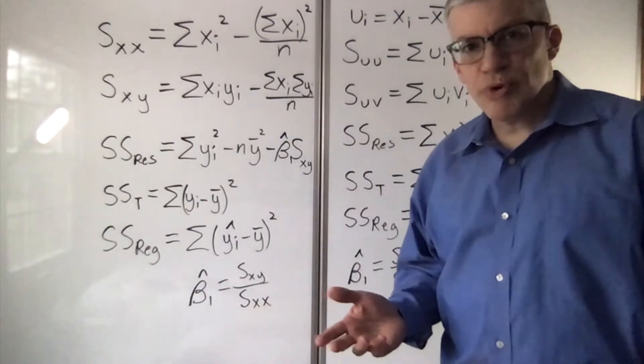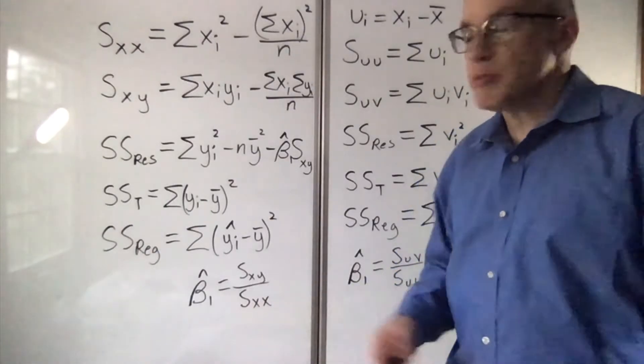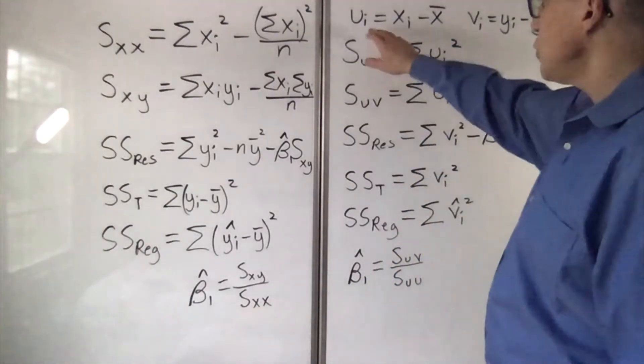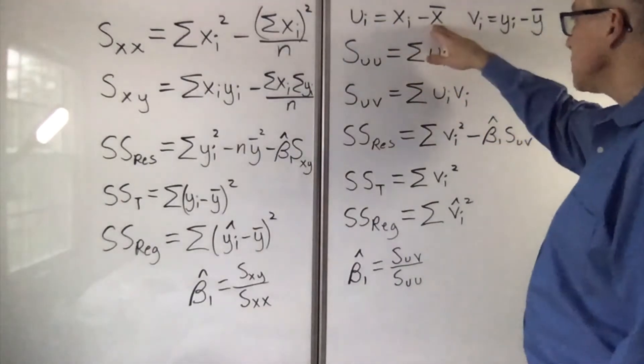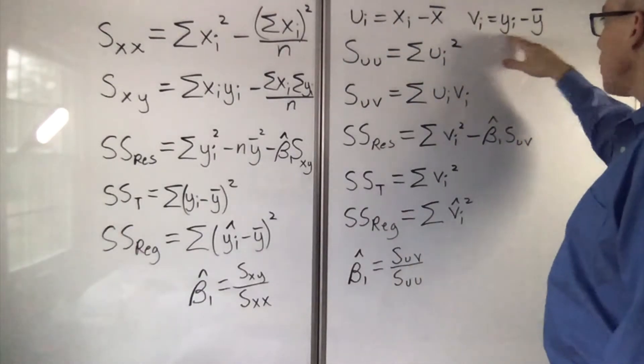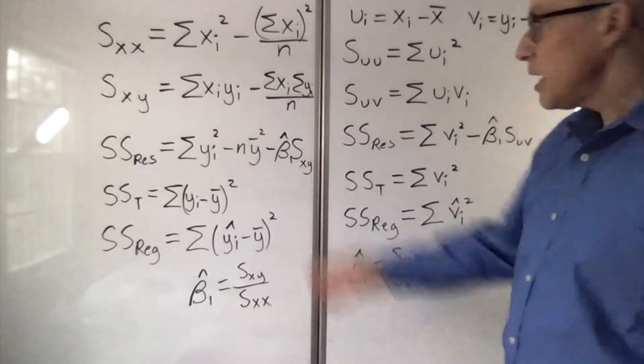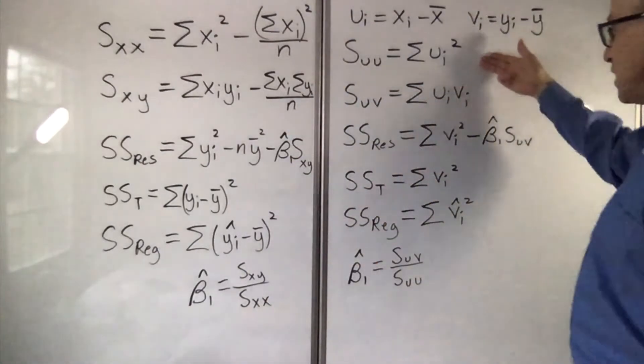And it's pretty trivial to rescale a variable, so we could simply shift the origin and say that ui is xi minus x bar, vi is yi minus y bar, and then those formulas simplify down to these.